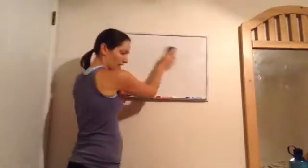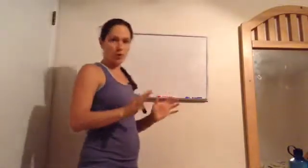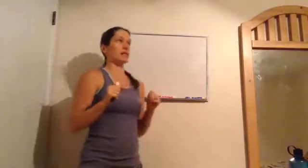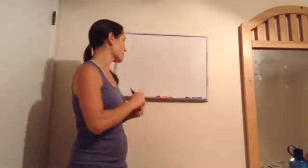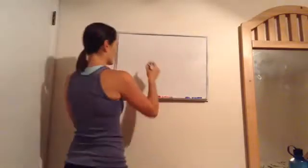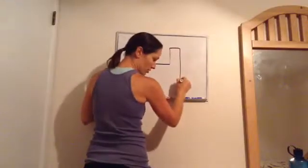Algebra 1, Lesson 3 — this one is on perimeter and circumference. Let's talk about what perimeter means. Perimeter uses Greek roots: 'peri' means around and 'metron' means measure, so perimeter means the measure around something.